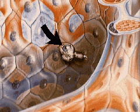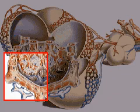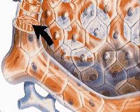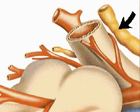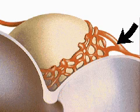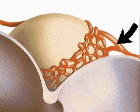Connective tissue fibers form a frame around the alveoli and support their delicate walls. Lymph vessels carry excess tissue fluid away from the alveoli. Pulmonary venules take oxygen-rich blood back to the heart.